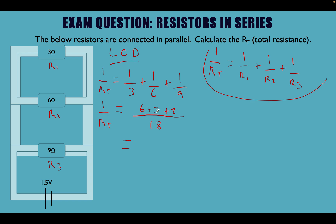Let's simplify: 6 plus 3 plus 2 is 11, still over our lowest common denominator of 18. So 1 over Rt equals 11 over 18.